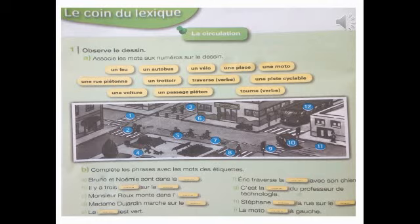A. Associe le mot au numéro sur le dessin. On va lire le vocabulaire ou le mot. « Tourne » ou « tourner ». C'est un verbe.